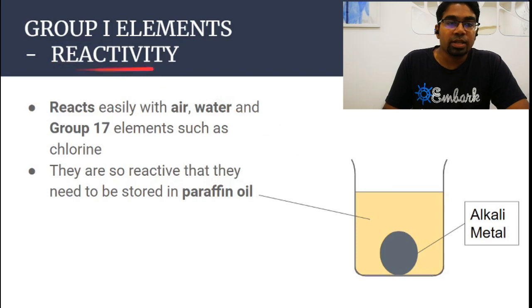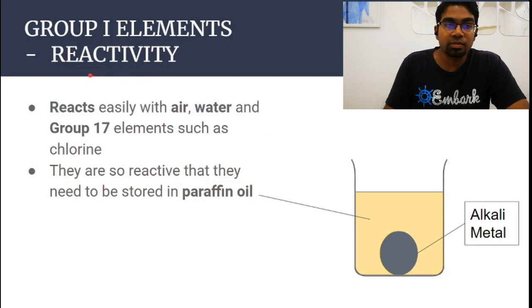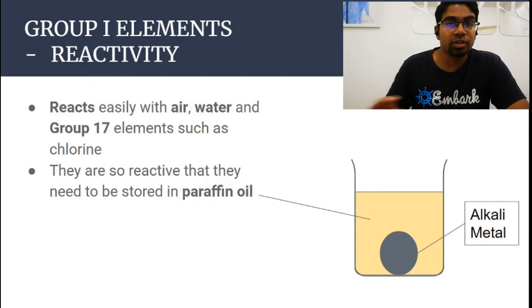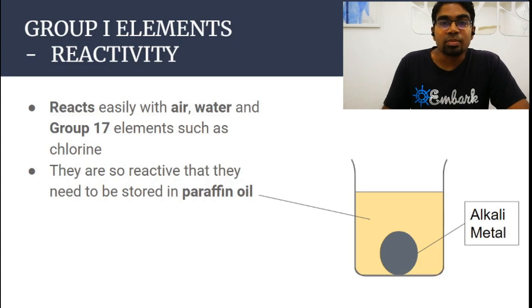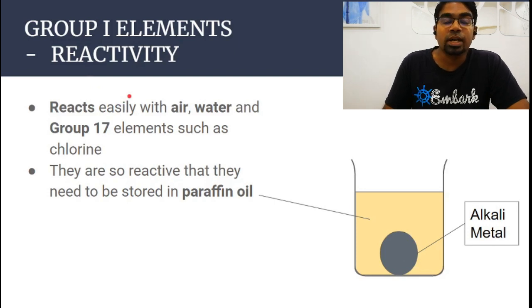When we talk about the reactivity of group 1 elements, they are very, very reactive compared to group 18 elements. Group 18 elements are completely unreactive — they do not react at all. This is because they already have a stable electron configuration; they already have full outer electron shells, so they do not need to gain or lose electrons.